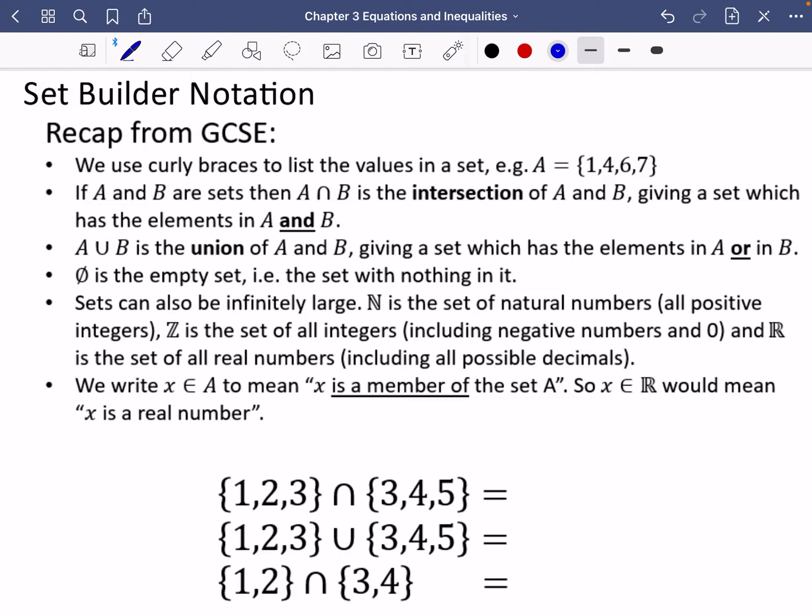So as a bit of a recap of what set notation is from GCSE, we use curly braces or curly brackets to list the values that are inside a set. So you may see that the set A has curly brackets 1, 4, 6, and 7.